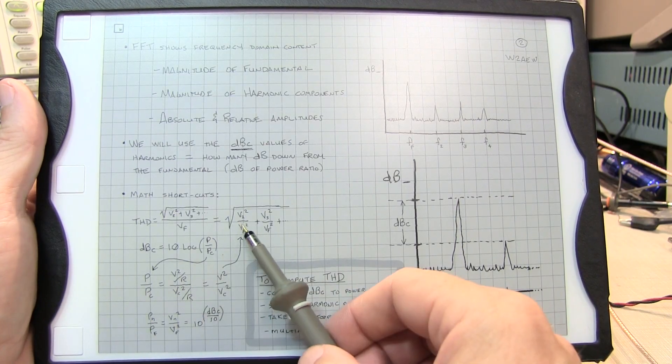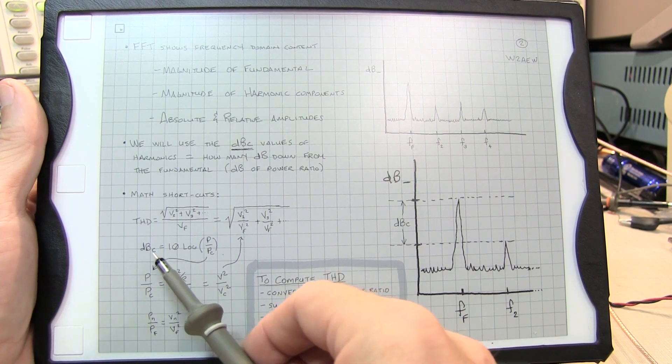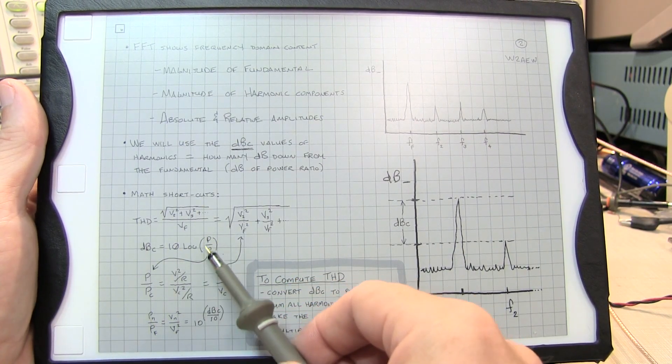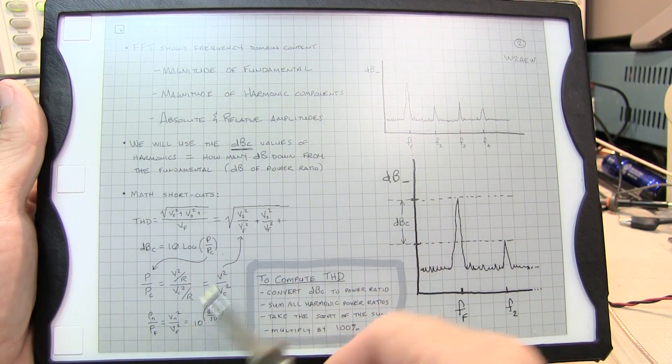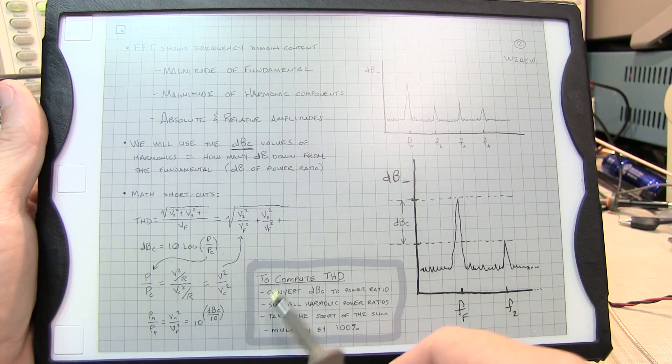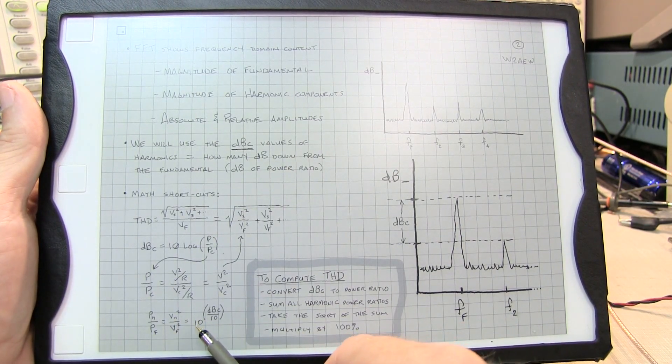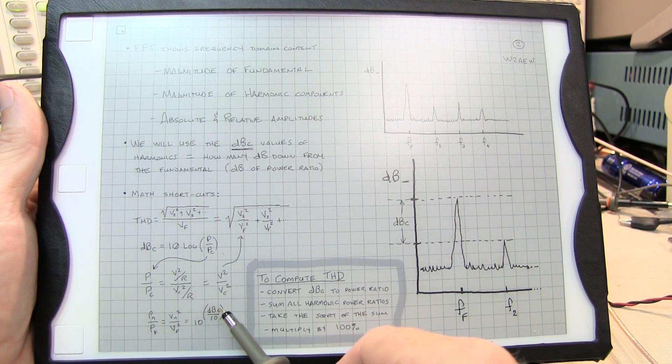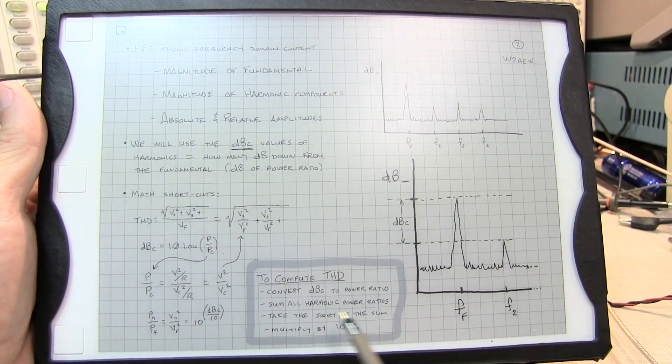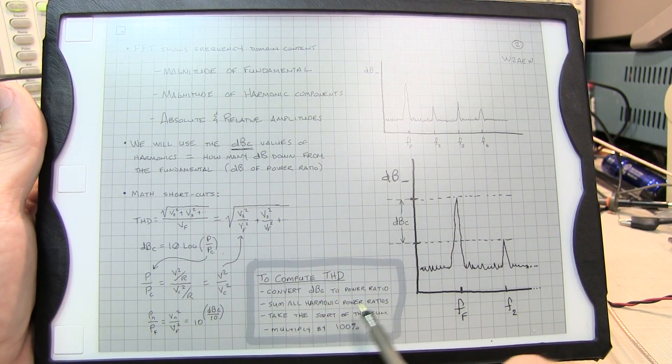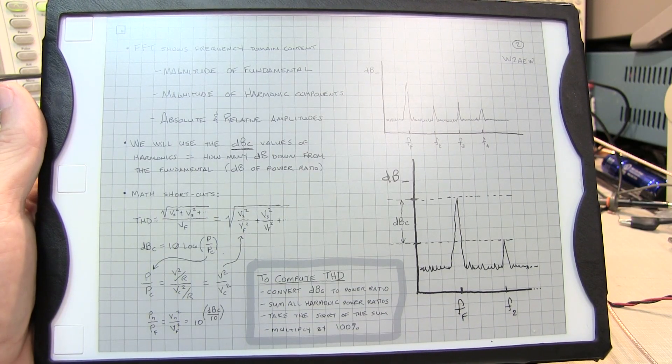So if all we could do is take these dBc values, and knowing that the dBc values we can easily compute this power ratio, that power ratio is equal to these ratios. So we just need to compute that value and then sum them up and then take the square root. So we do that by taking 10 raised to the dBc value divided by 10. We do that for each of the dBc values that we have. We sum all of those up, take the square root of the sum, and then multiply by 100%.